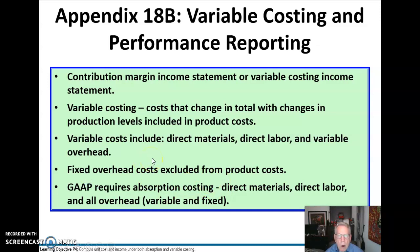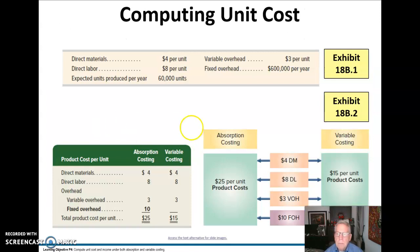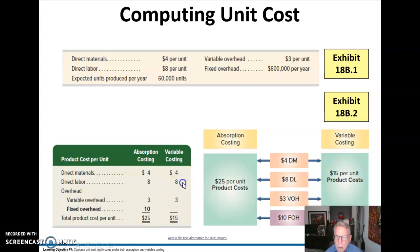When we're doing variable costing, that's not in accordance with generally accepted accounting principles — we use this for managing our business. Under absorption costing, we have $4, $8, $3, and $10 of fixed overhead for a total of $25. But under variable costing, we only use direct materials, direct labor, and variable overhead for $15.